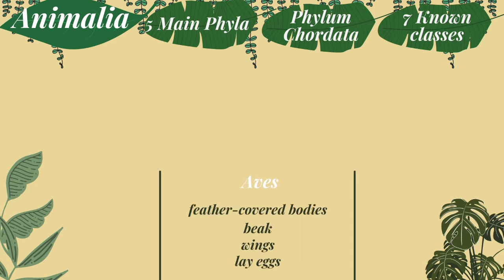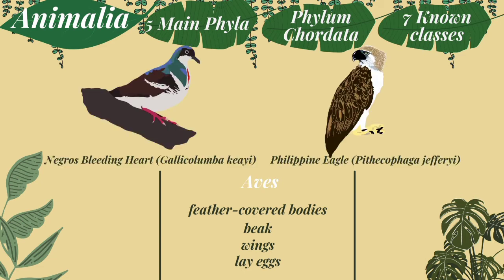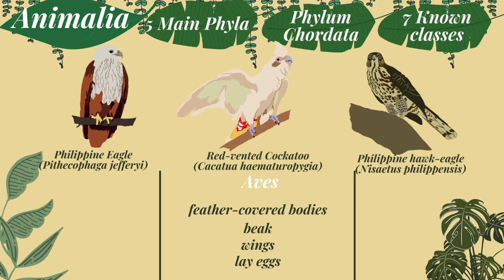The sixth class under phylum chordata is class Aves, or birds. Aves or birds have feather-covered bodies. They have a beak or bill to get their food. They have wings to make them fly. However, there are some birds that are so big they cannot fly, which are called flightless birds. Also, species under this class lay eggs. Examples of class Aves are the Negros bleeding heart, Philippine eagle, red-vented cockatoo, and Philippine hawk eagle.